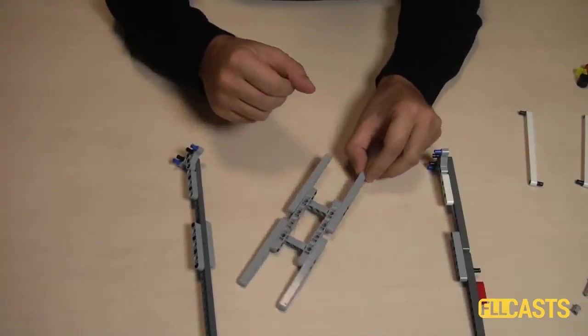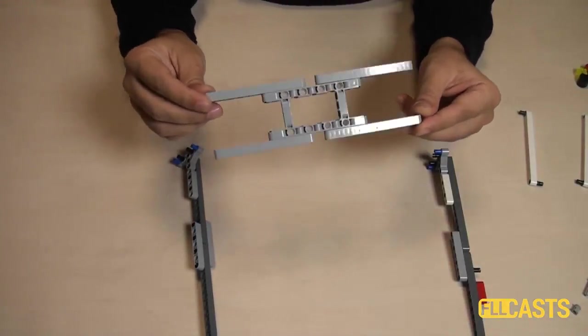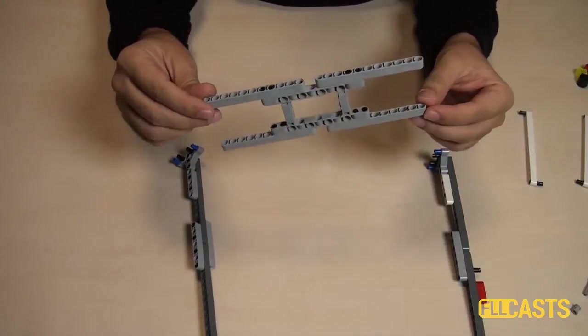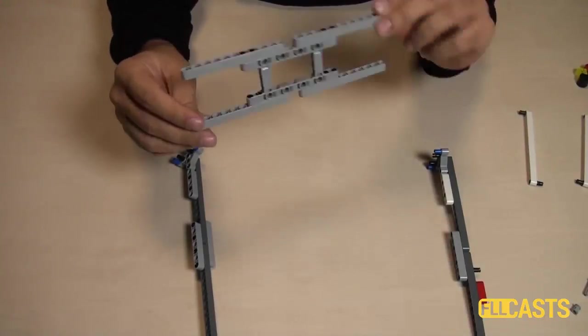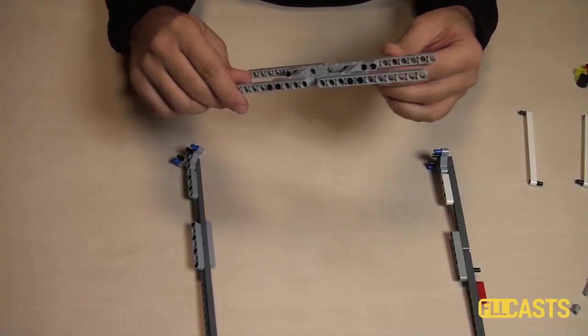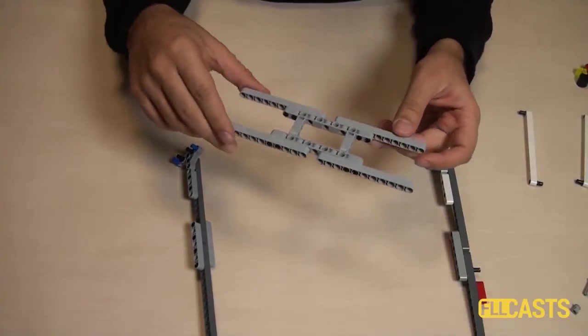First I'll start with the base of our catapult. It's a very simple construction with just a frame and four beams attached to each other. The larger this base is, the more stable the catapult will be when it fires different small parts.